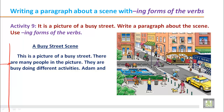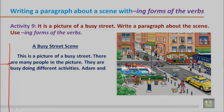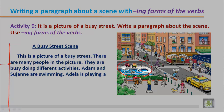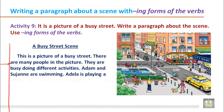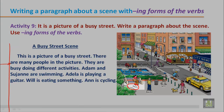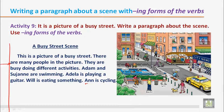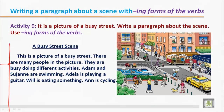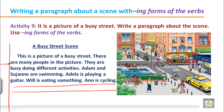They are busy doing different activities. We can see in the picture: people are swimming, people are sitting in the bus or tram, people are at the bookstore buying something, talking and walking. There is a car running along the street. Adam and Susan are swimming. Adela is playing a guitar. Will is eating something. And one person is cycling. This way, you can write about 10 or 12 sentences describing the scene of a busy street.